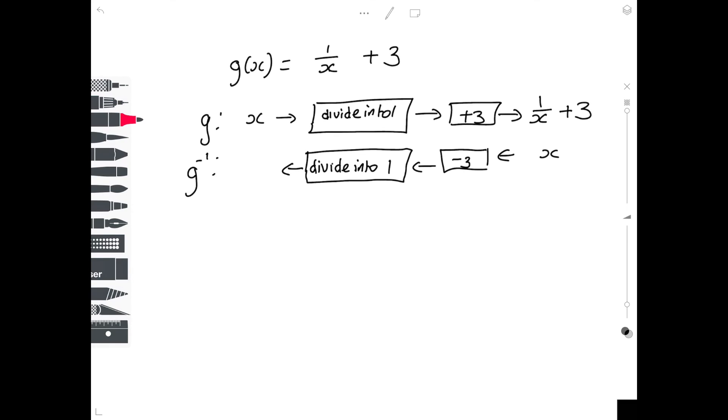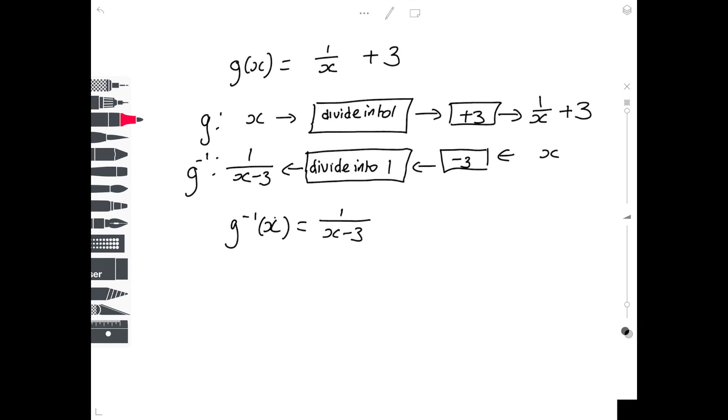And the way I'm going to write that down, I'm going to start with x, I'm going to take away 3 and I have to divide all of that into 1. So if my original function g of x is 1 over x plus 3, my inverse function, the inverse of x, is 1 over x minus 3.